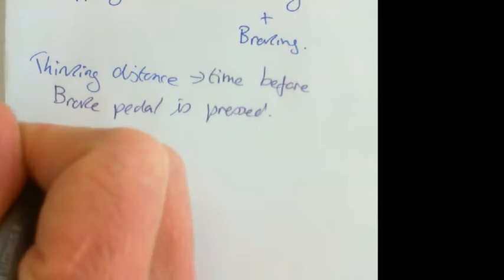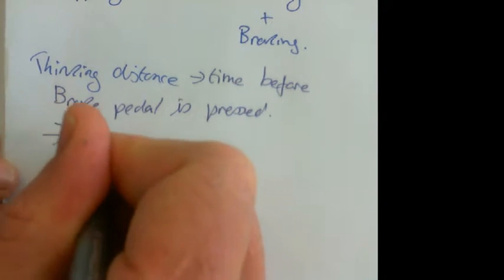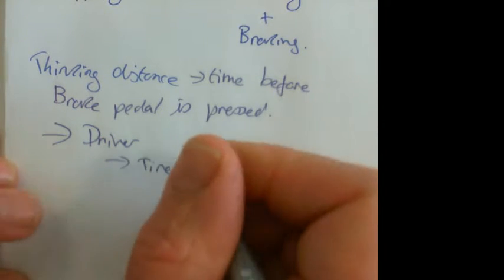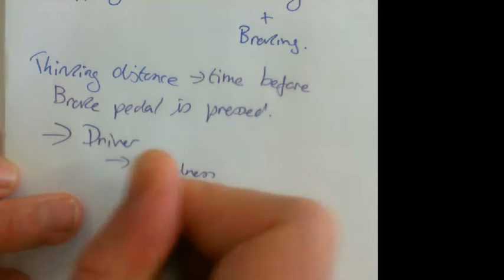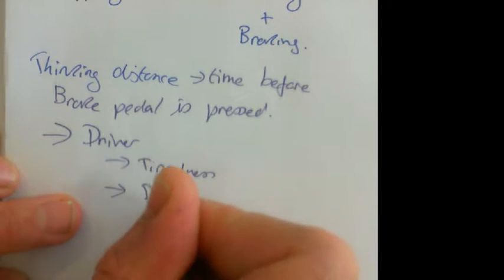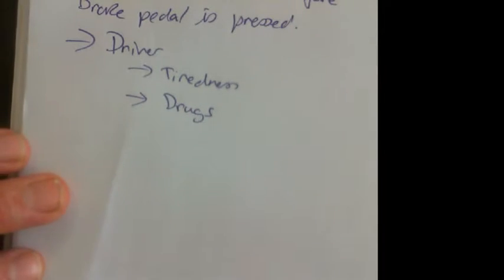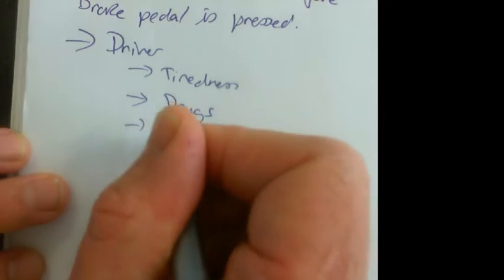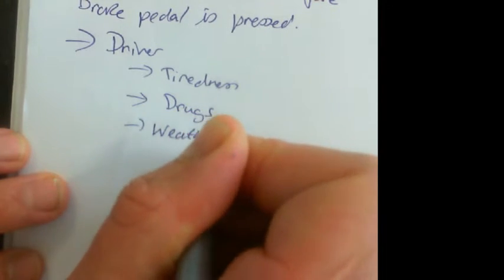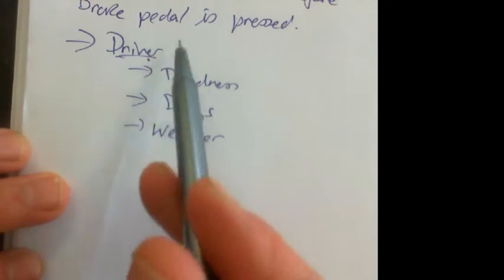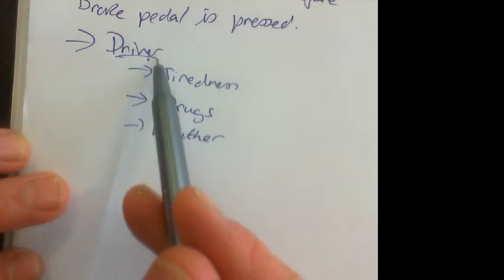This is affected by things to do with the driver, things like tiredness, drugs including alcohol, and weather conditions. Because if you can't see, you can't think you need to brake. Thinking distance - the driver does the thinking. If you remember, thinking distance is all things to do with the driver.